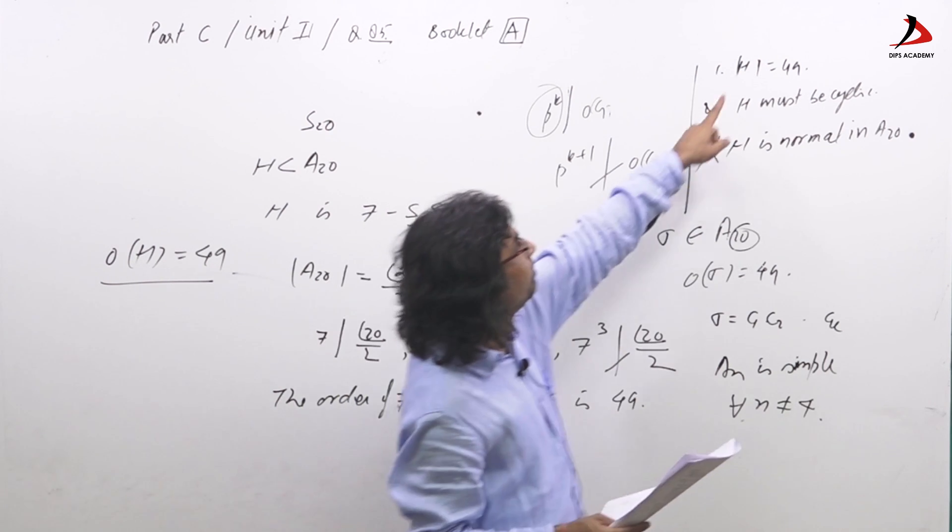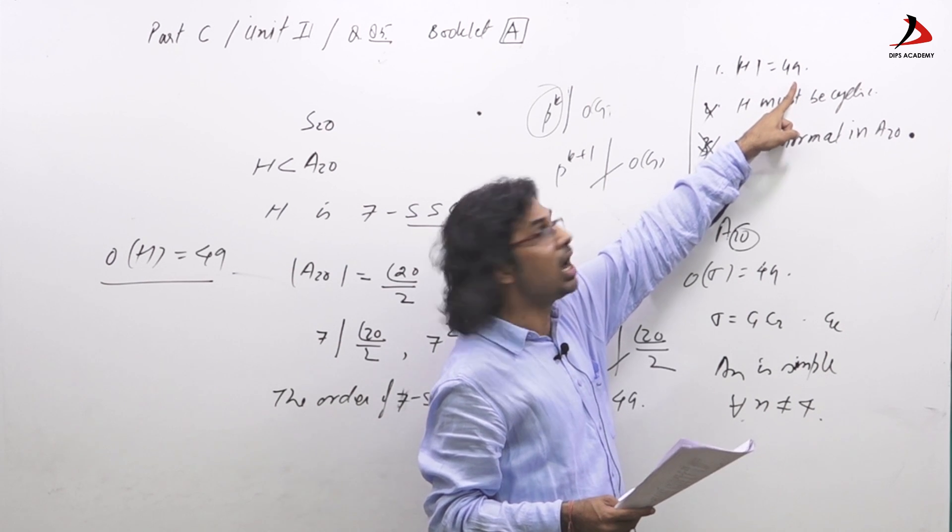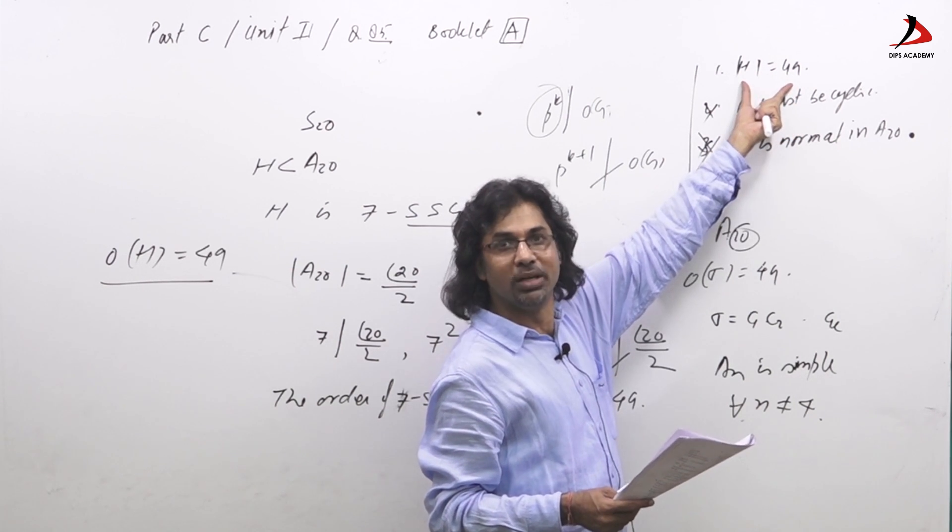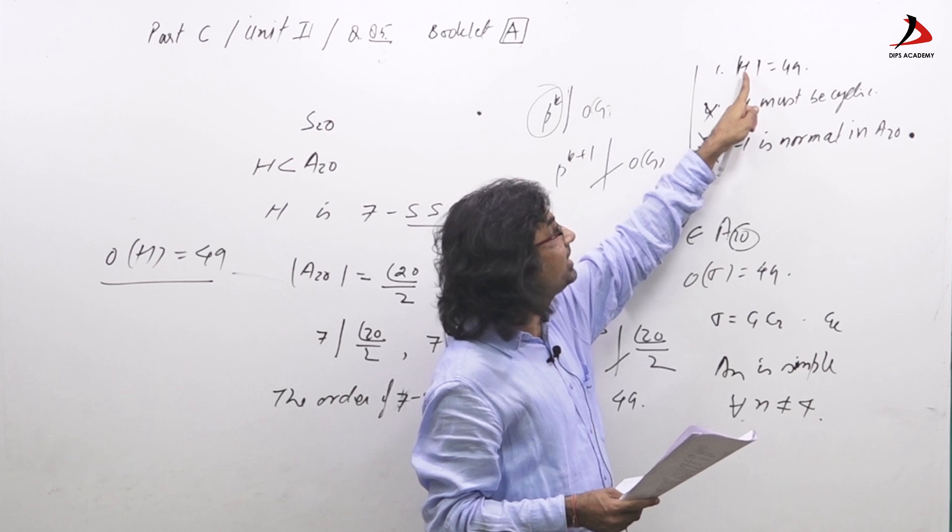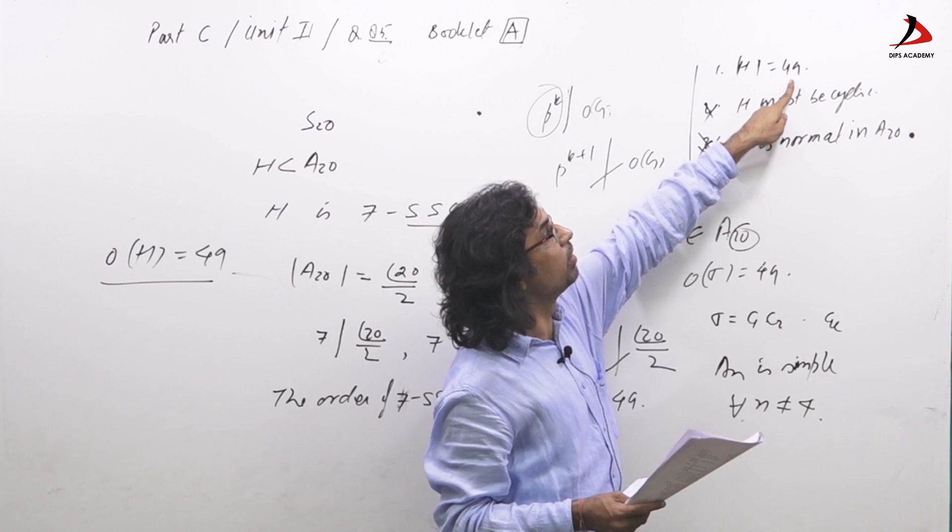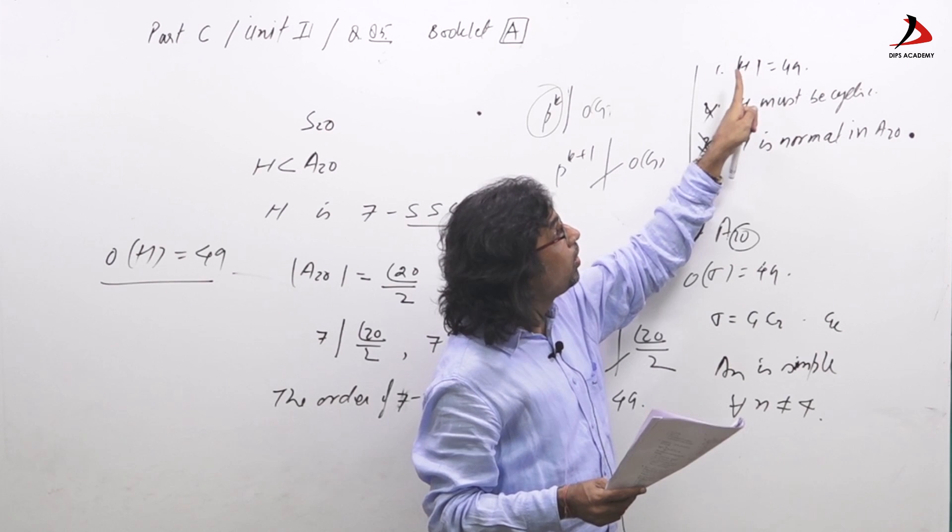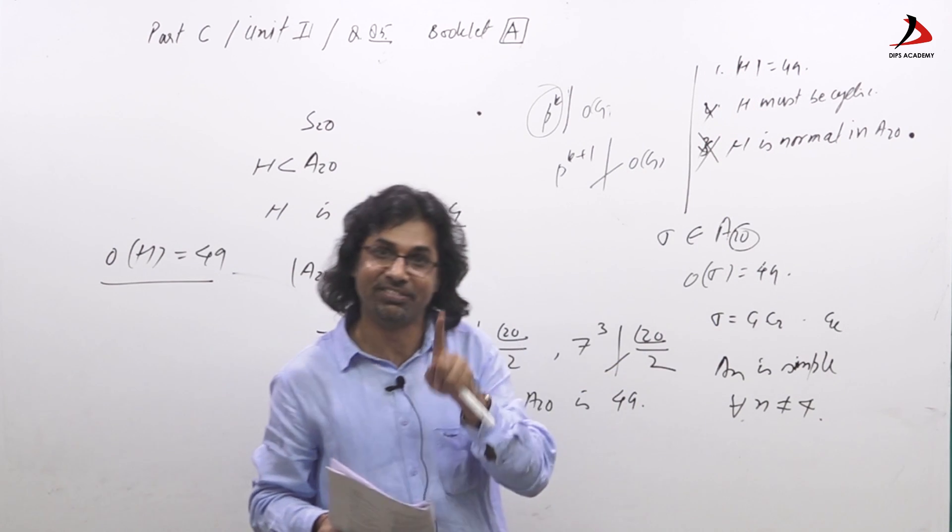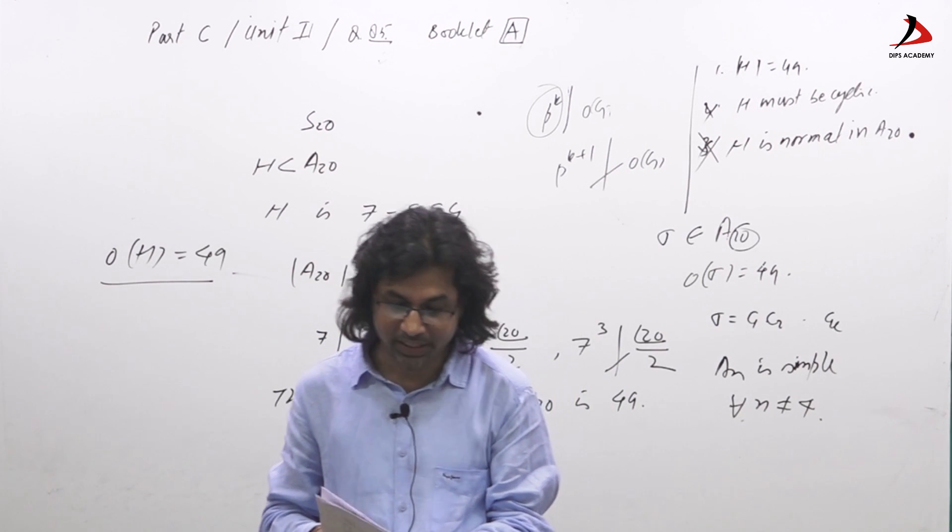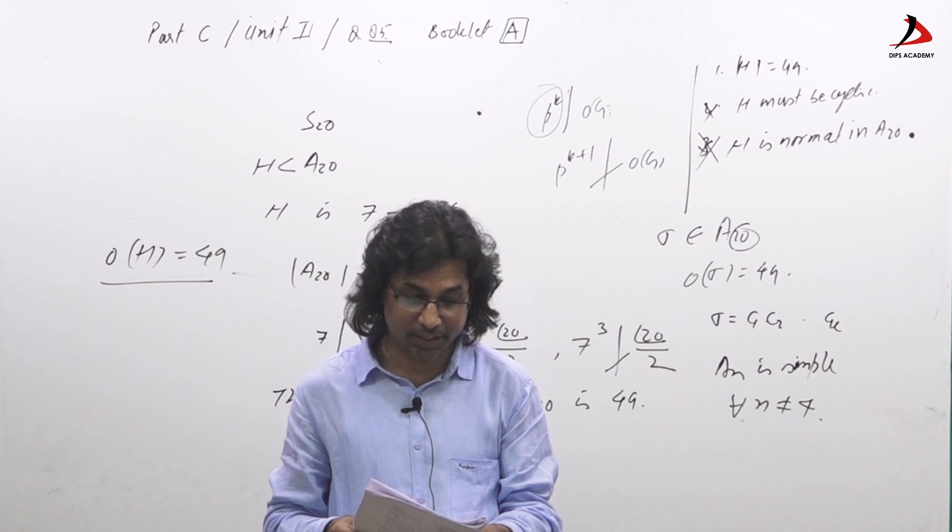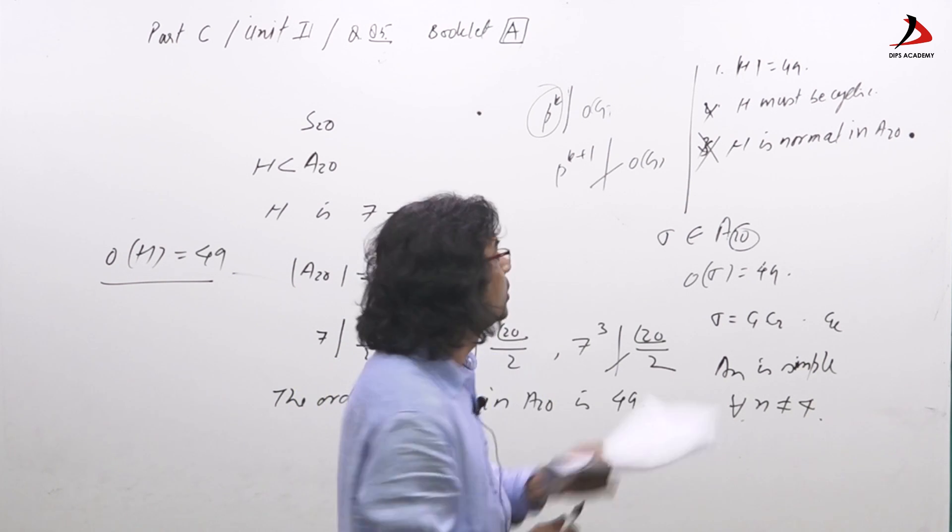So if it has 49 elements, H has 49 elements. So half even, half odd cannot be possible to contain for H. H cannot contain half even and half odd permutations as this is odd. So all the permutations of H must be even, and A_20 is set of all even permutations. So H must be subset of A_20 as well.